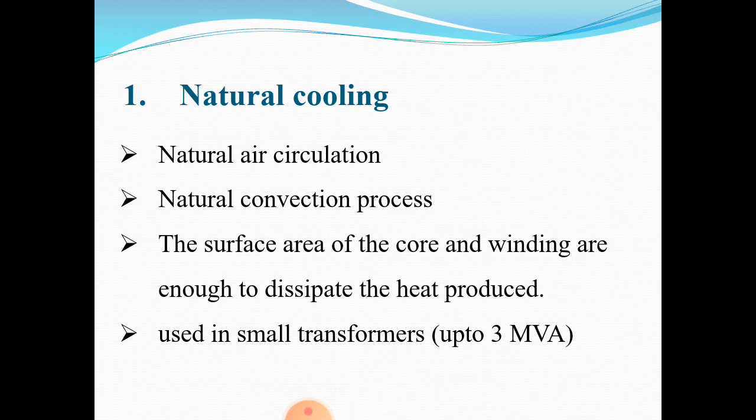The first type is natural cooling. Here, the heat produced in the transformer is cooled by natural air circulation. When the temperature of the transformer is higher than that of the surrounding air, heated air is replaced by cool air through natural convection. The surface area of the core and winding are enough to dissipate the heat produced. This type of cooling system is used in small transformers of rating up to 3 mega volt-amperes.